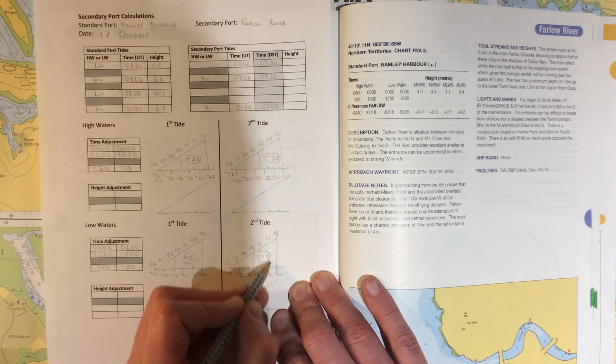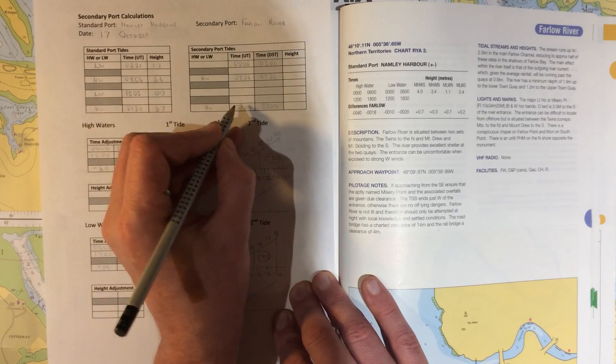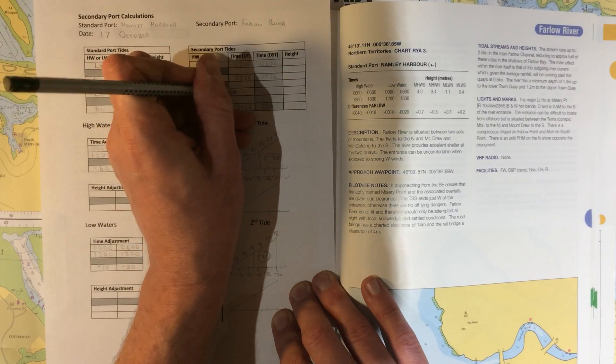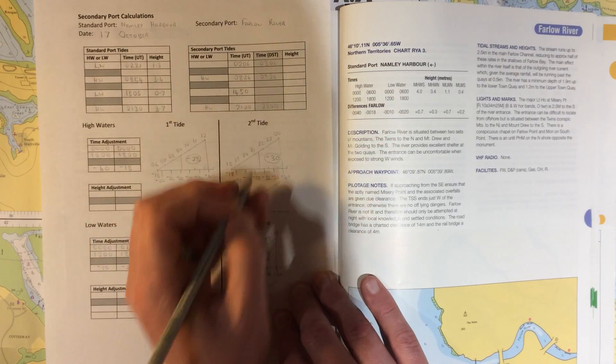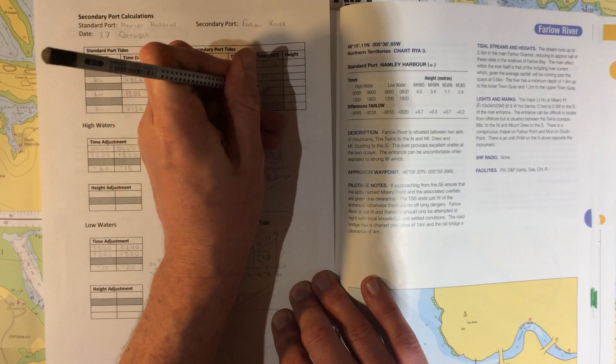So the difference we need to make here is we need to subtract 15 minutes, which makes our time in UT 14:50. And now we add the hour: 15:50.